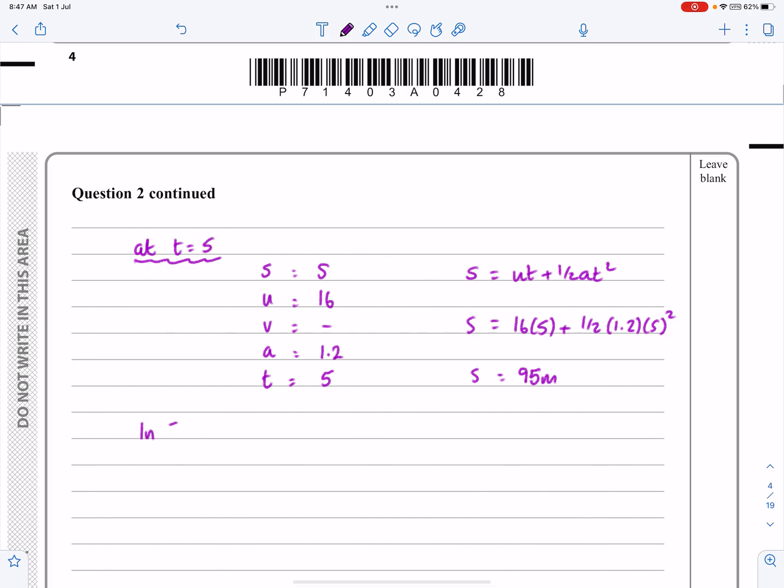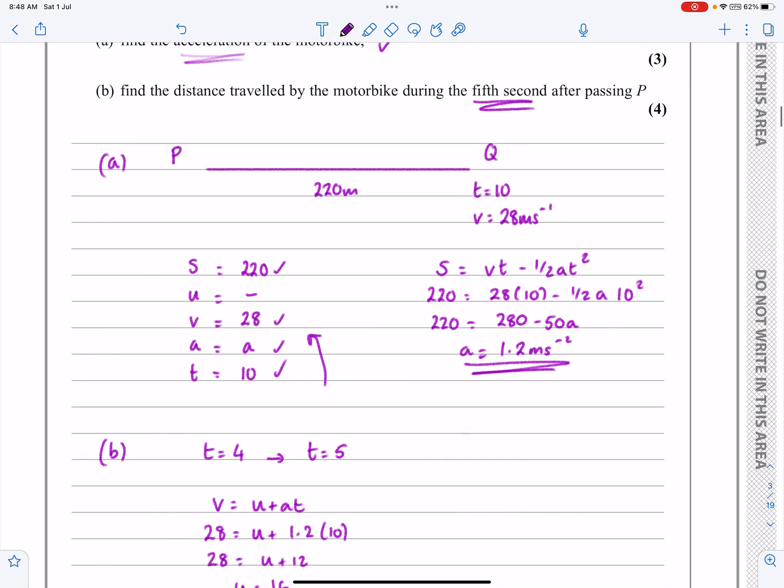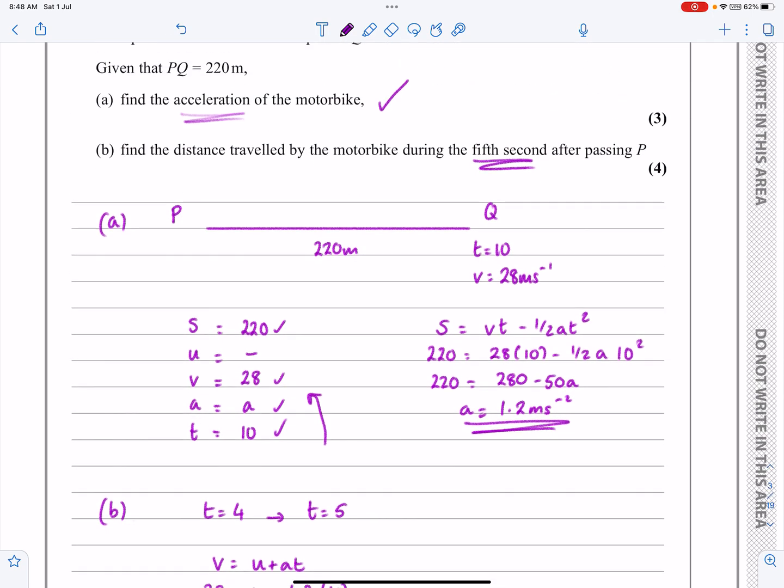So in the 5th second, we're going to get that S is equal to 95 minus that previous one, which was 73.6, which means it's 21.4 metres that it travels in that 5th second there. OK, hopefully that makes sense. Quite a convoluted second part.